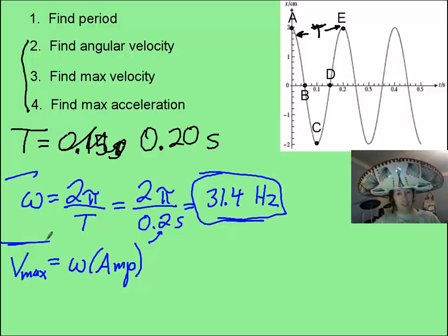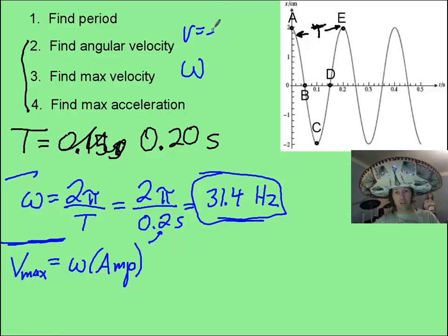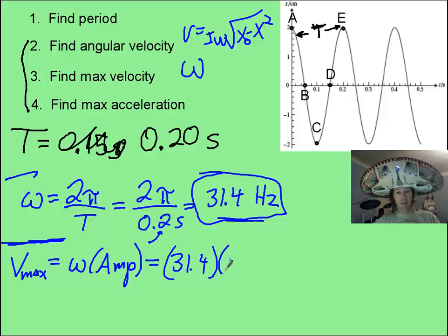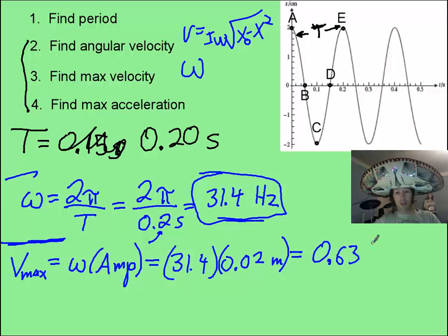Then the second question, max velocity, it takes a little bit of thought, because you have to know that v max, coming from that weird equation of velocity equal to like a plus minus ω and all this stuff squared here, that turns into just angular velocity times the amplitude. And so you are filling in 31.4 times the amplitude of 0.02 meters. I converted from centimeters into that, and that's going to give me a value of 0.63 meters per second as my maximum speed.